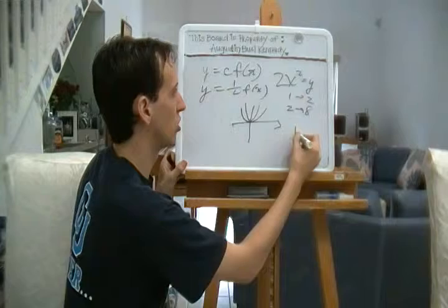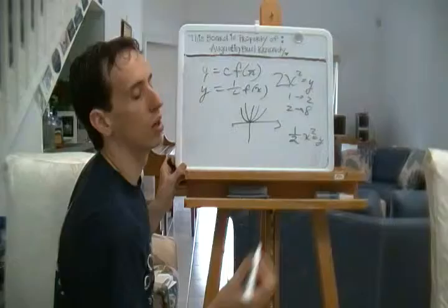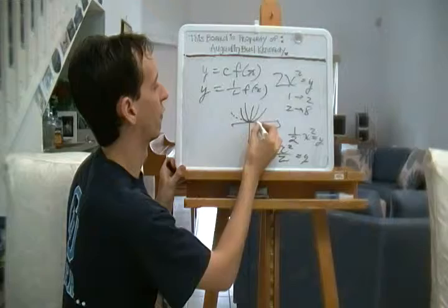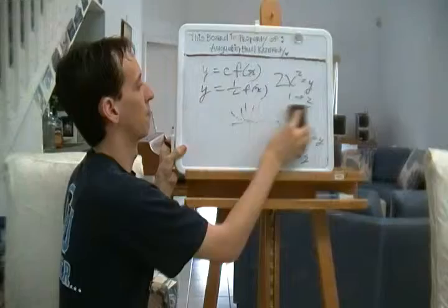Conversely, with 1 half, it'll work the exact opposite. If the function is 1 half X squared equals Y, or as I frequently write, X squared over 2 equals Y, same thing. If you have that, you're going to have a fatter graph.